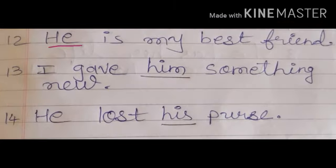Number twelve: he is my best friend. In this sentence, I underline 'he' — he is a personal pronoun. Number thirteen: I gave him something new. Maine usko kuch naya diya tha. So here in this sentence, 'him' is a personal pronoun.